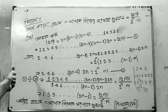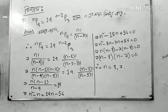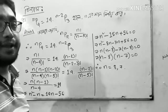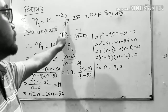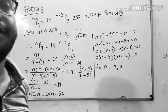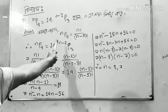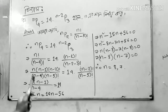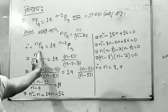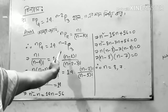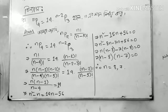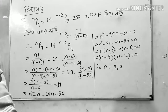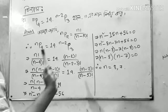Now we just have a problem. So we are going to start to solve this problem. We are going to solve this problem — n minus 2, 3, and n minus 4. n-2-3 factorial.